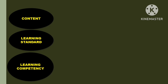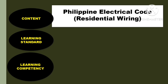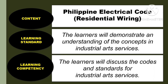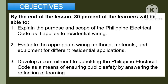We have our new objectives. By the end of the lesson, 80% of the learners will be able to: first, explain the purpose and scope of the Philippine Electrical Code as it applies to residential wiring; second, evaluate the appropriate wiring methods, materials, and equipment for different residential applications; and third, develop a commitment to upholding the Philippine Electrical Code as a means of ensuring public safety by answering the reflection of learning.